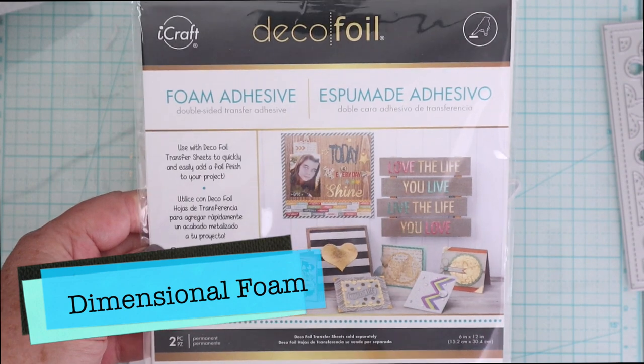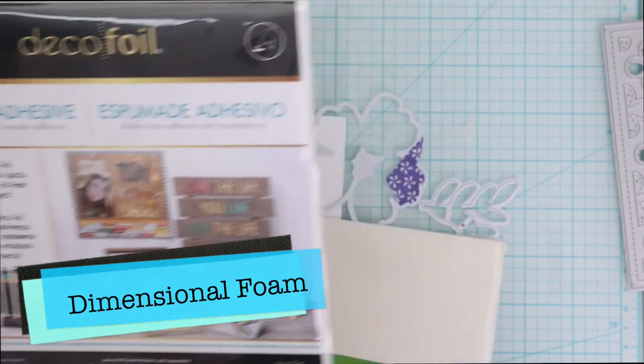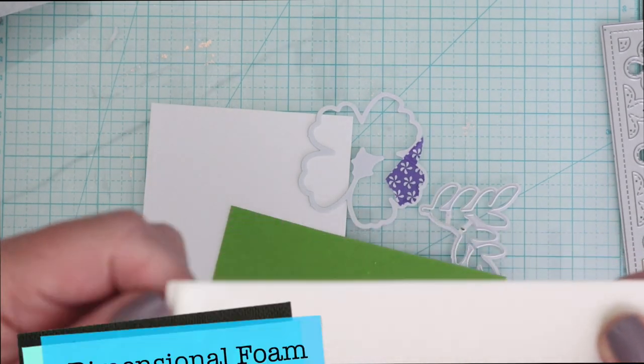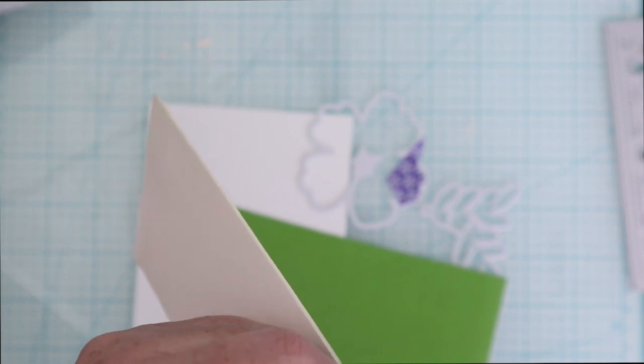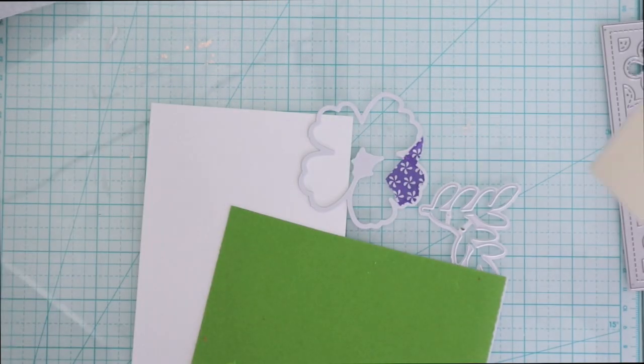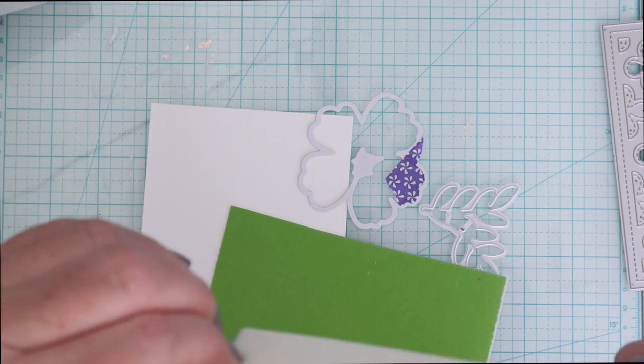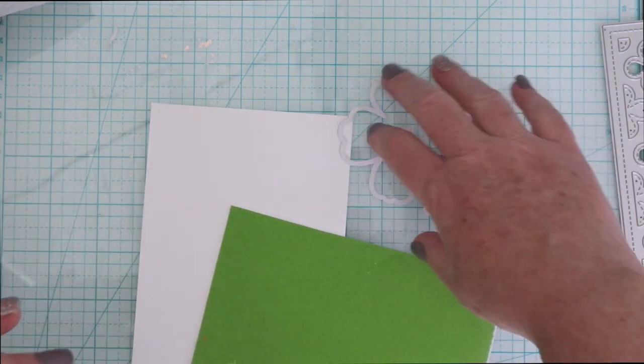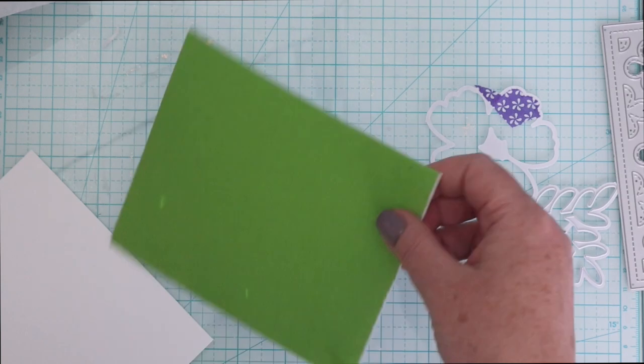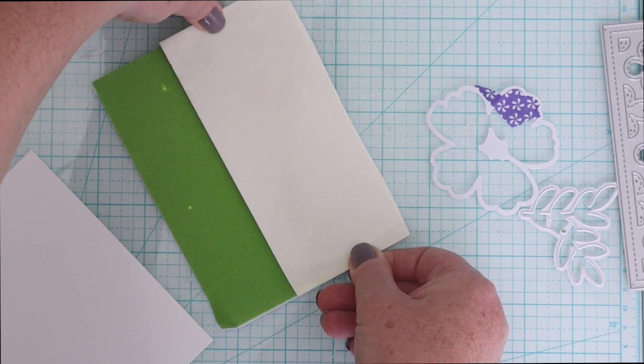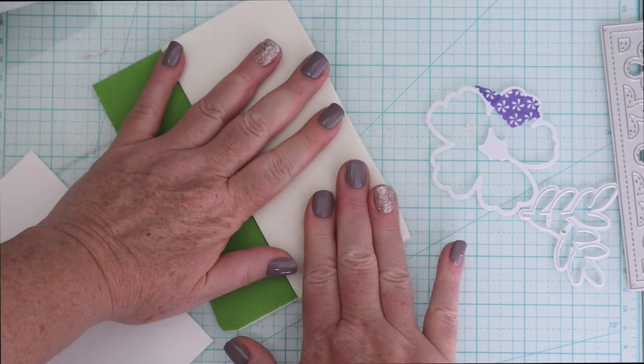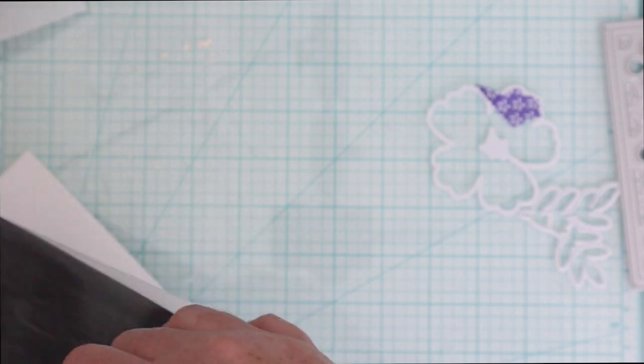You can even make your Flock dimensional by using ThermoWeb's Double-Sided Foam Sheets. So this is ThermoWeb's DecoFoil Foam Adhesive. It is a double-sided adhesive foam. I've cut a strip and I'm going to peel off one of the protective layers. I like to peel off the one that's a little tougher to get off first and then the other side will be really simple.